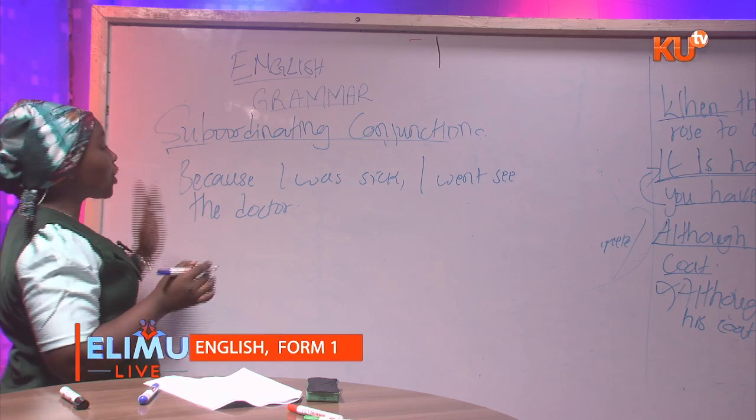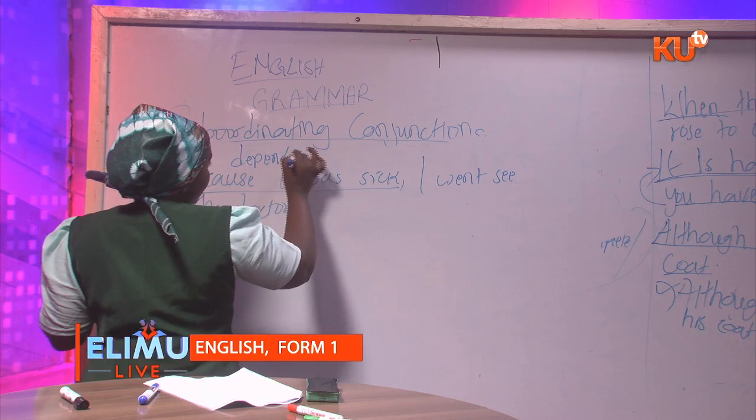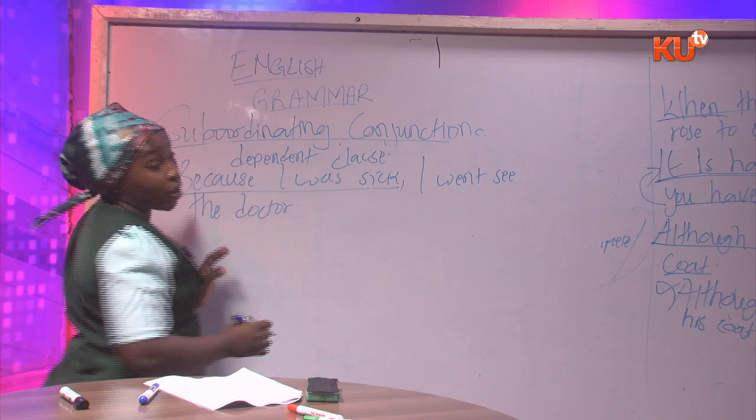For example, 'because I was sick, I went to see the doctor.' 'Because' is our subordinating conjunction. From 'because' up to where the comma is — 'because I was sick' — that is the dependent clause.